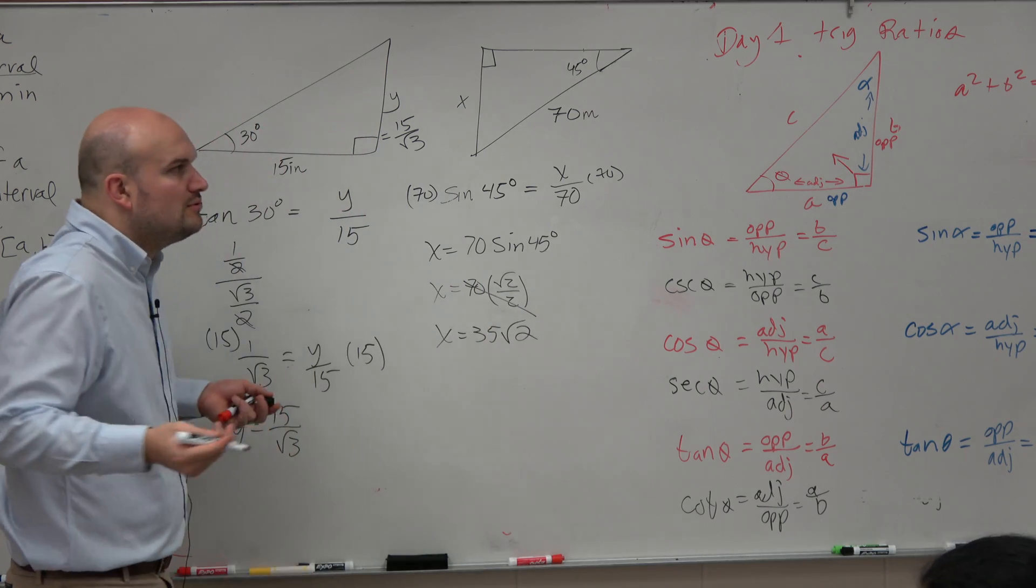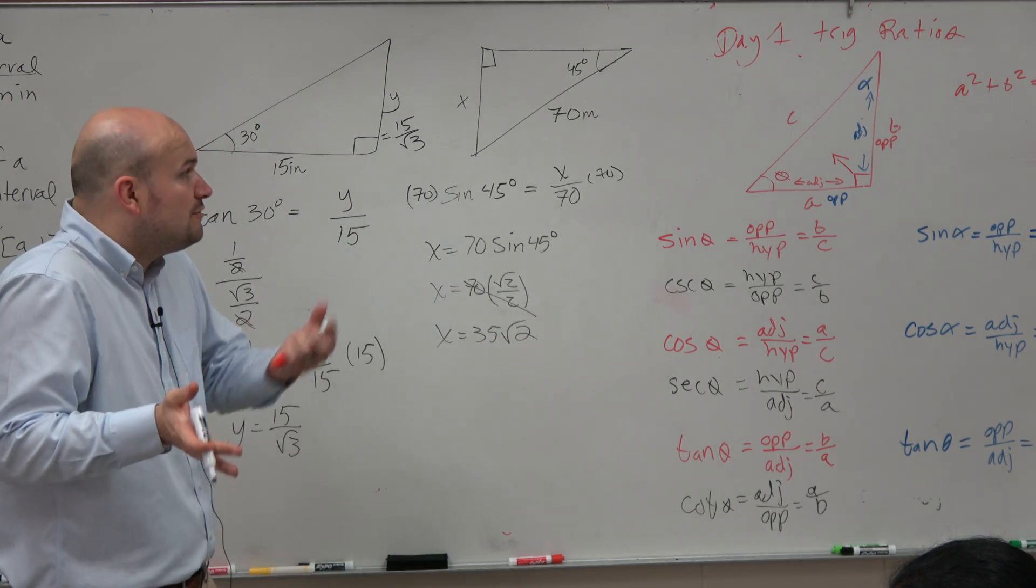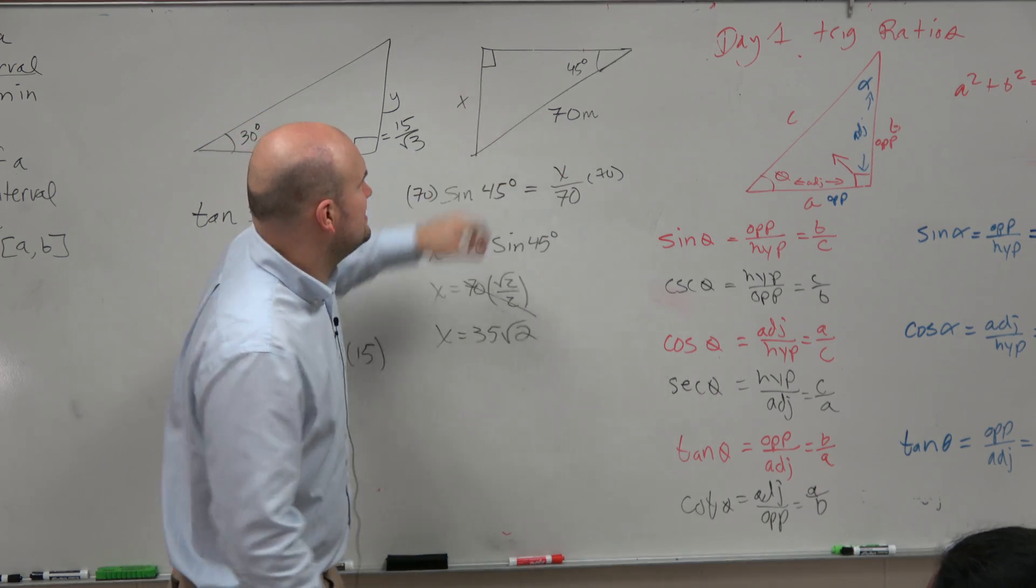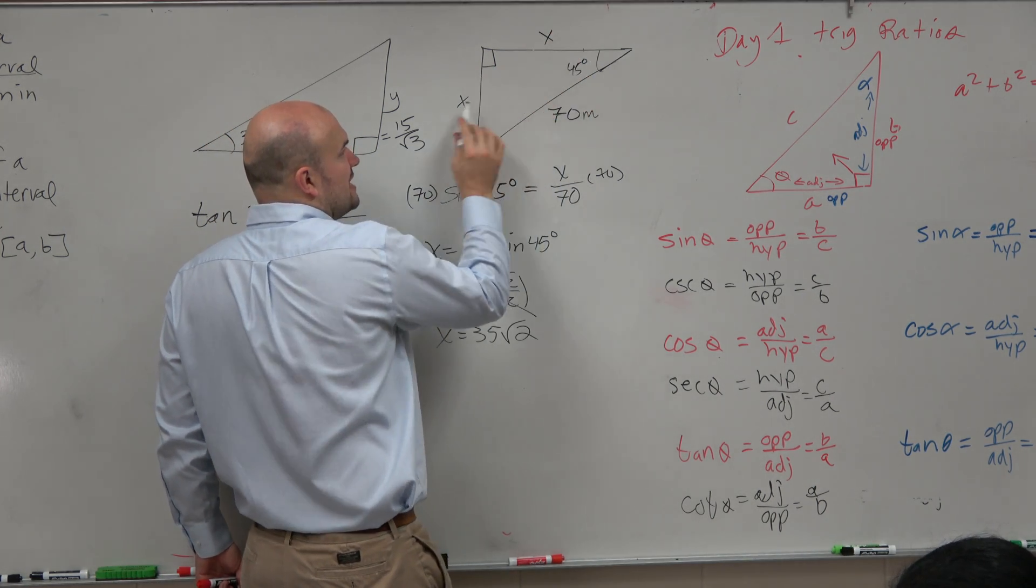35 square root of 2. No calculator is needed. You could remember your trigonometric function and say, oh, to go from this, these two are, if this is a 45, 45, then these two are the same.